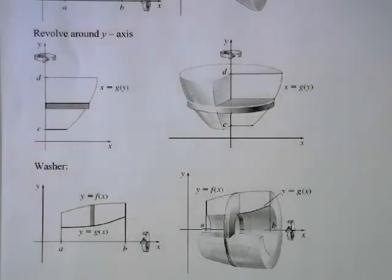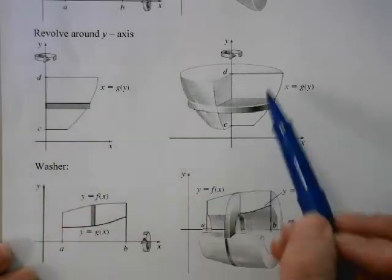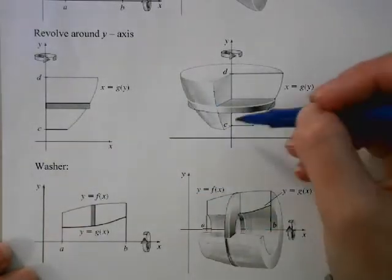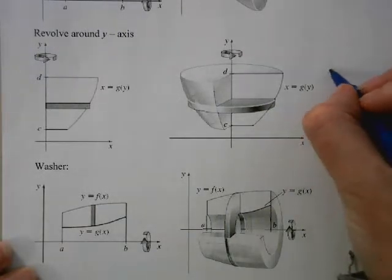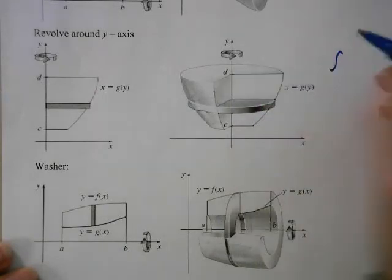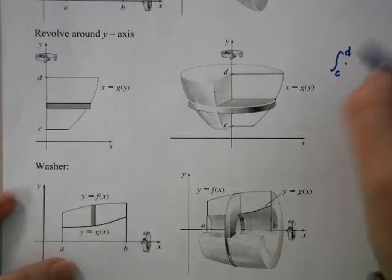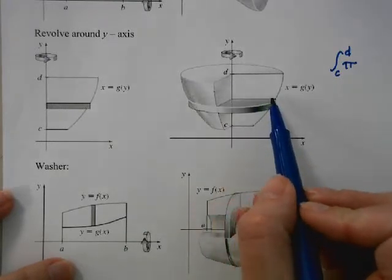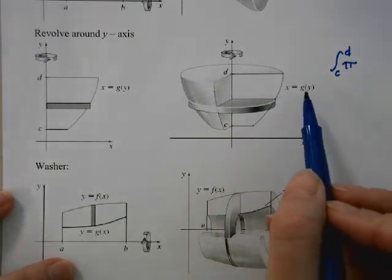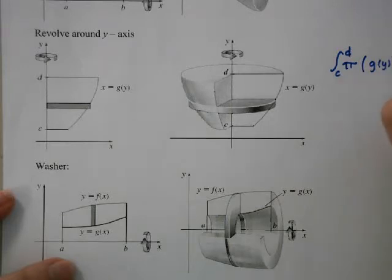Now, instead of revolving around the x-axis, if we revolve something around the y-axis, we take this region and rotate it to get a bowl shape. The discs are now going up the y-axis. So this becomes the integral from c to d of pi times the radius squared, where the radius is the x value as a function of y — that is, g(y) squared dy.